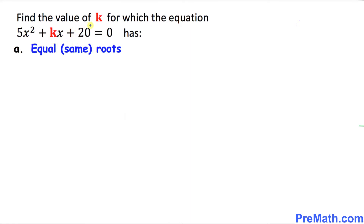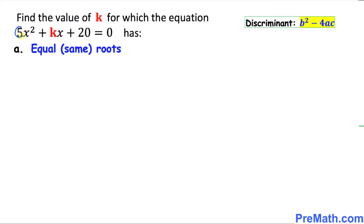In this part, we are going to find the value of k for this given quadratic equation if the roots are same or equal. Before we go any further, let's recall that the discriminant is always equal to b squared minus 4ac. This quadratic equation is in standard form. In our case, a equals 5, b is k, and c is 20.